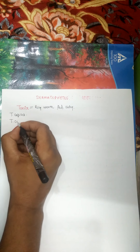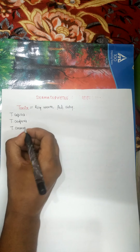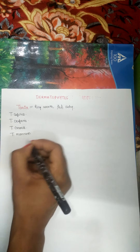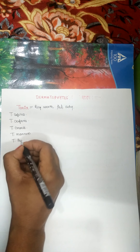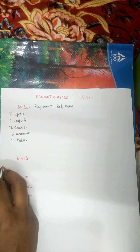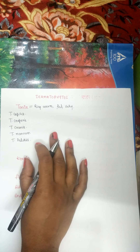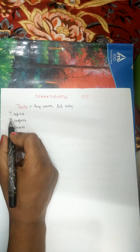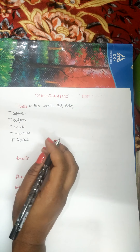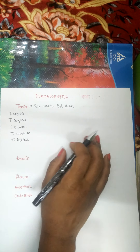If tinea affects the body it is tinea corporis; the groin area is tinea cruris; the hand is tinea manuum; and the feet is tinea pedis. There are other tinea types as well. These are red, itchy ring-shaped lesions.